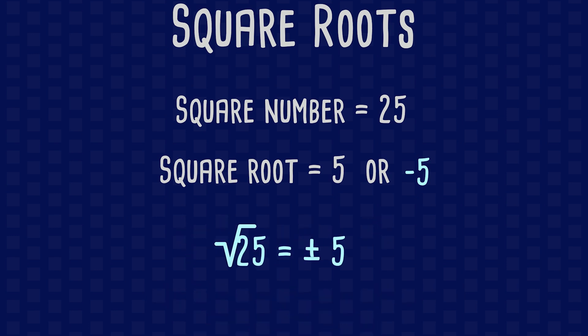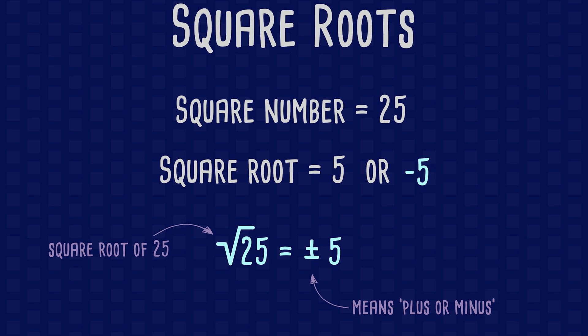For every square number there are two square roots: a positive root and a negative root. You can use this symbol to represent both numbers, the positive or the negative. And this symbol represents the square root. This symbol is called a radical.